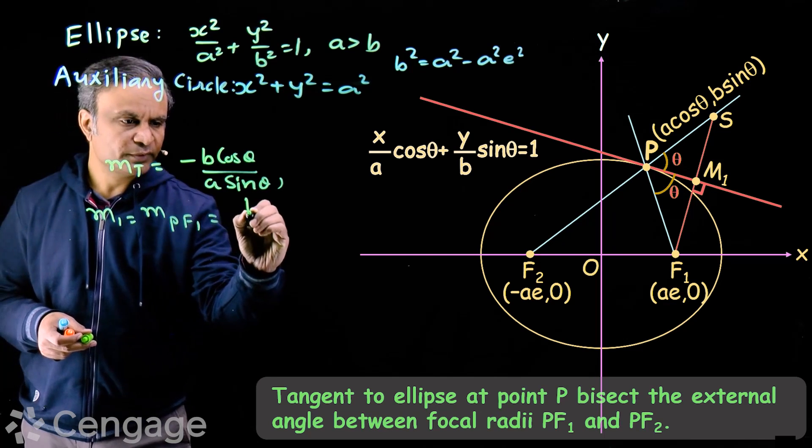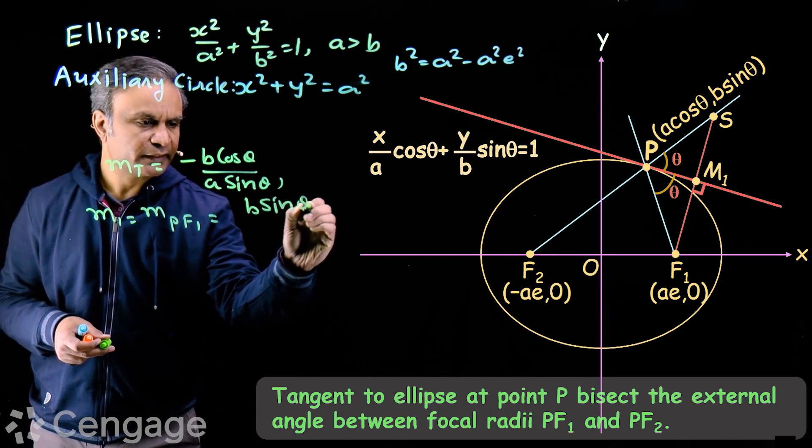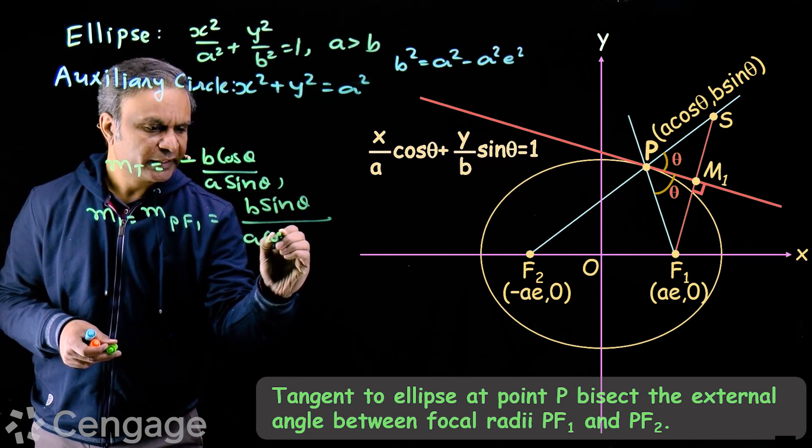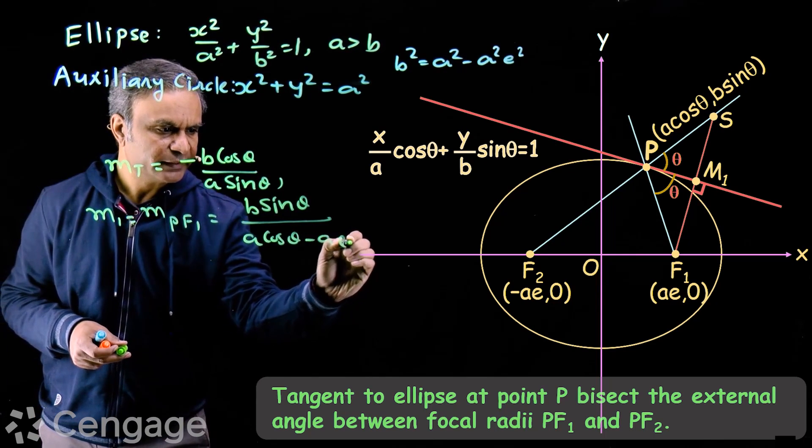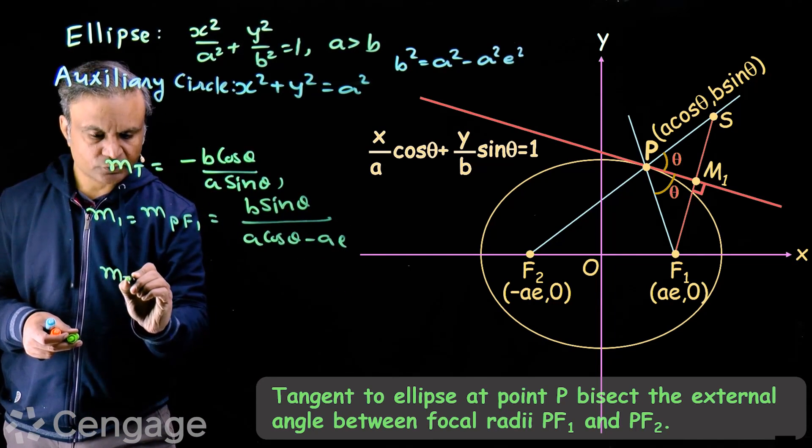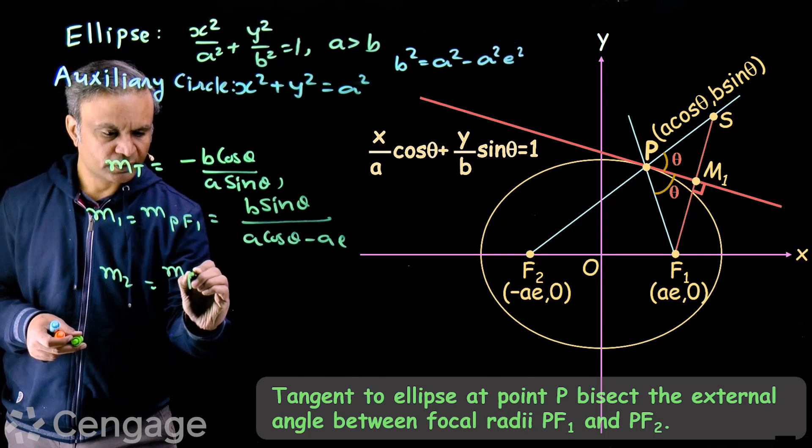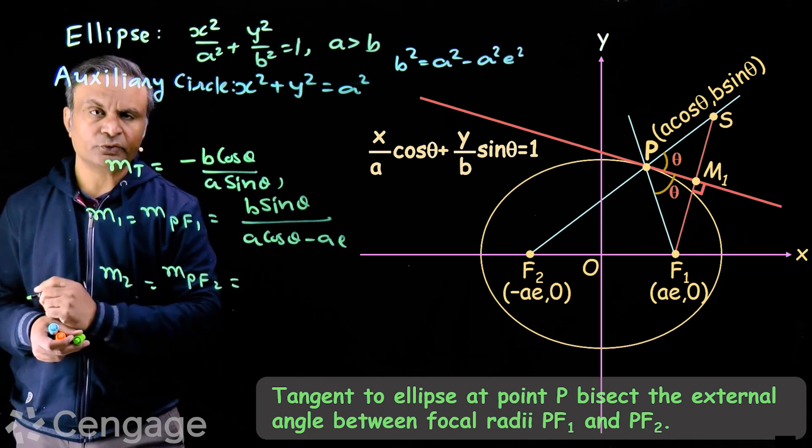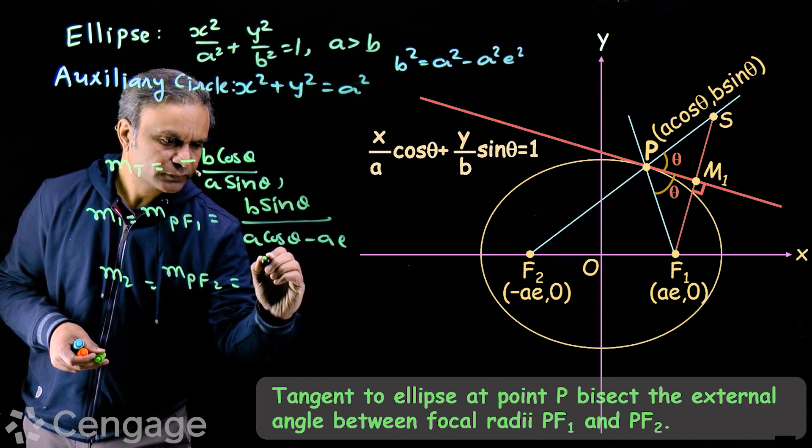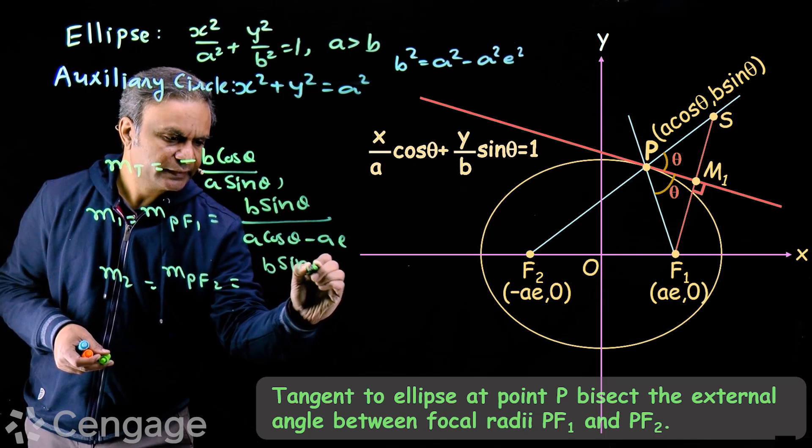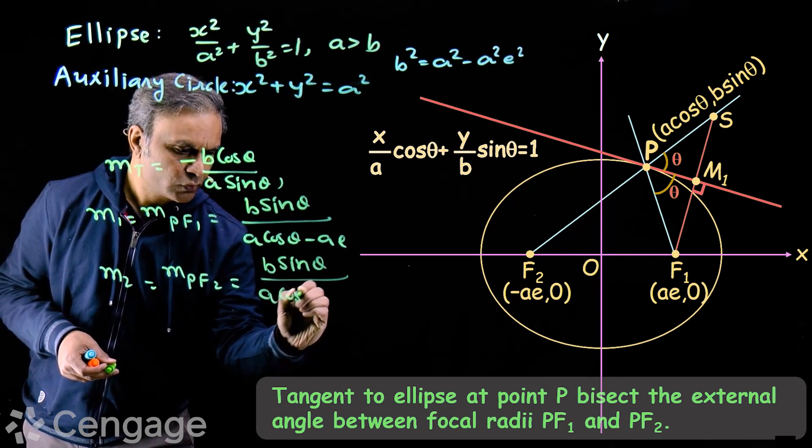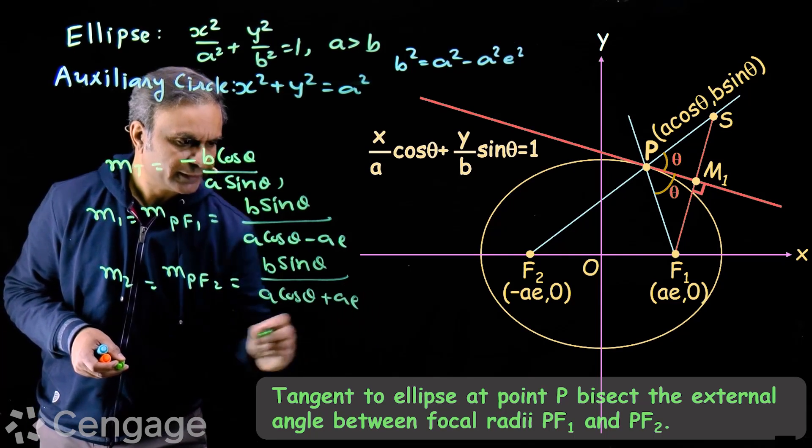Slope will be B sin theta upon A cos theta minus A, and slope of line PF2, say M2, this is B sin theta upon A cos theta plus A.